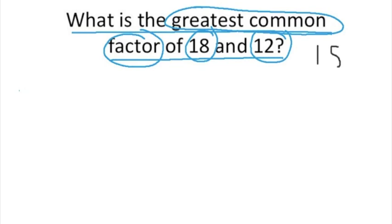If you remember from the previous lesson, what are factors? Factors are numbers that we can multiply together in order to get another number. For this example, we need to think of numbers that we can multiply together that are going to give us 18 and 12, and we'll begin by listing all of the factors of 18.